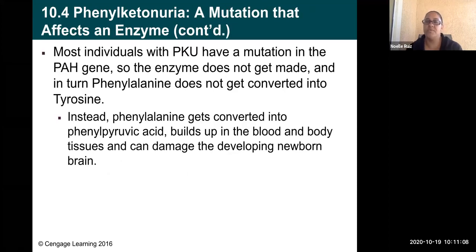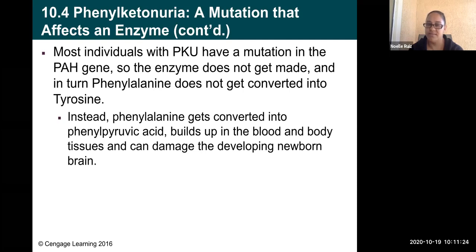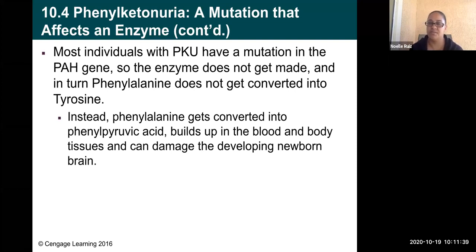Most individuals with PKU — phenylketonuria — have a mutation in the PAH gene, so the enzyme does not get made and they cannot turn phenylalanine into tyrosine. Instead, phenylalanine gets converted into phenylpyruvic acid, which will build up in the body, in the blood and tissues, and cause damage to developing newborn brains.